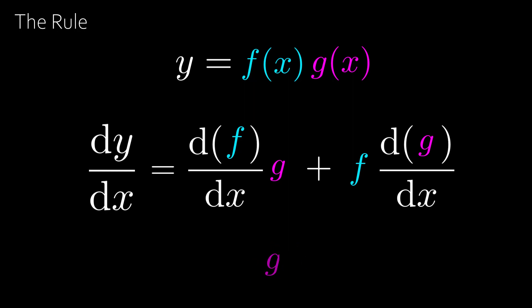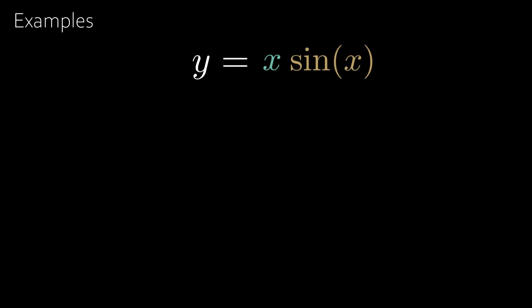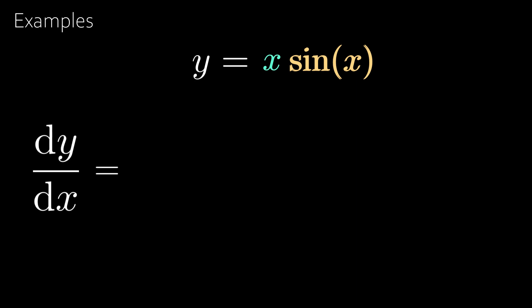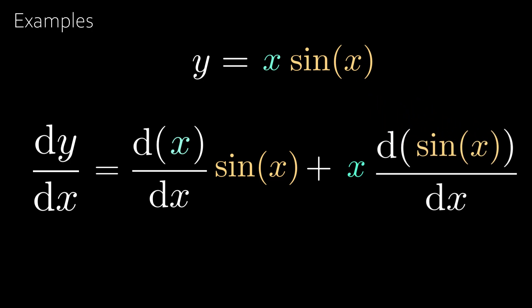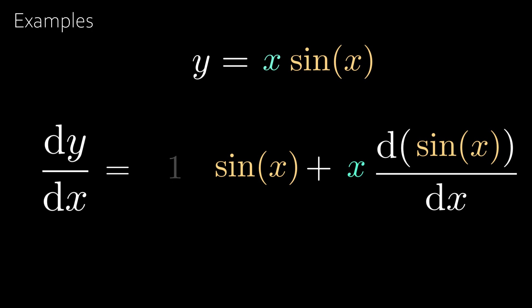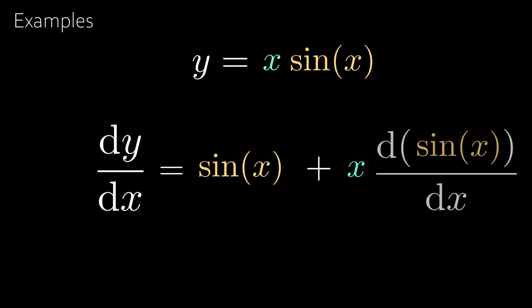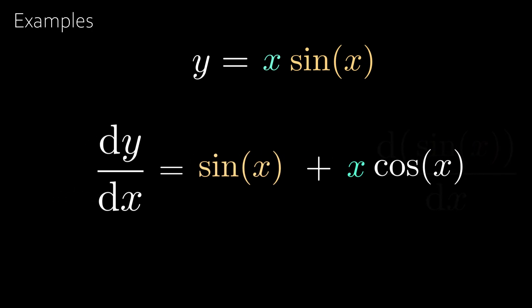The best way to grasp this rule is through examples. Take y = x·sin(x). Then dy/dx is equal to the derivative of the first function times the second function, plus the first function times the derivative of the second function. We know the derivative of x is 1 and the derivative of sin(x) is cos(x), giving dy/dx = sin(x) + x·cos(x).